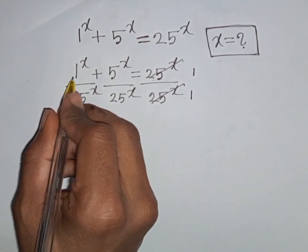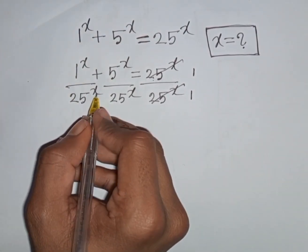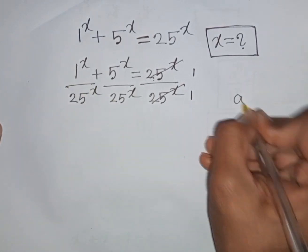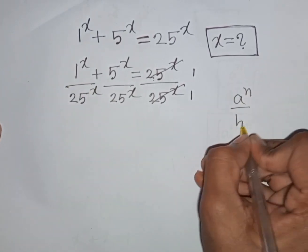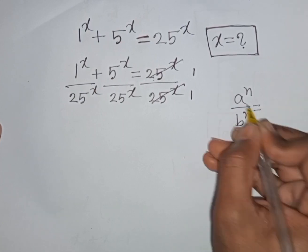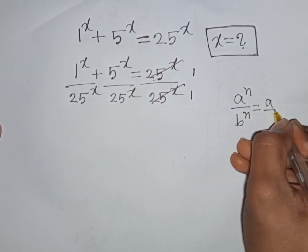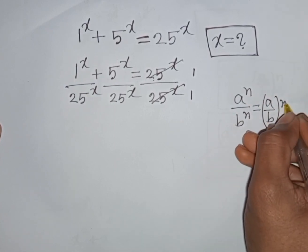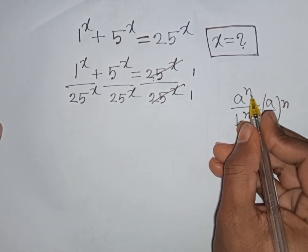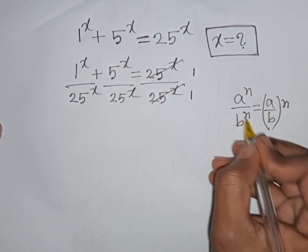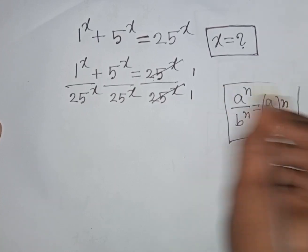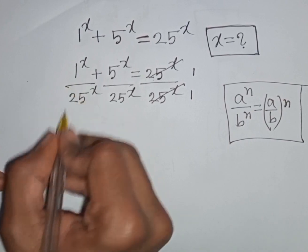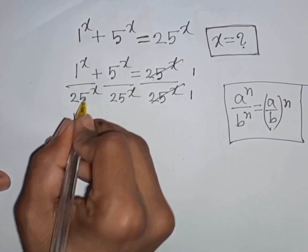Now 1^x divided by 25^x — same power but different base. Remember this formula: a^n · b^n = (a · b)^n, where the same power but different bases are combined into one bracket with common power n.